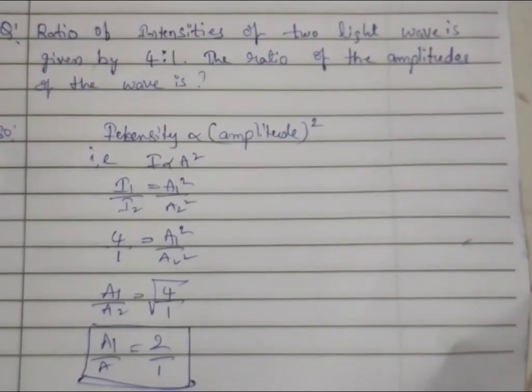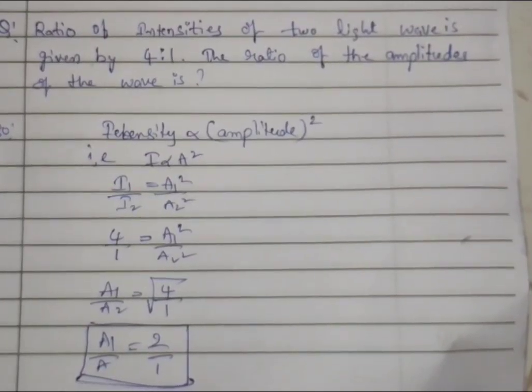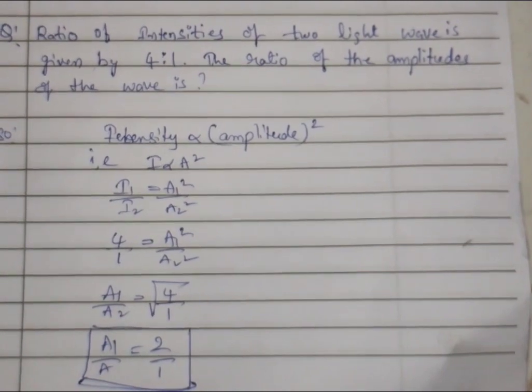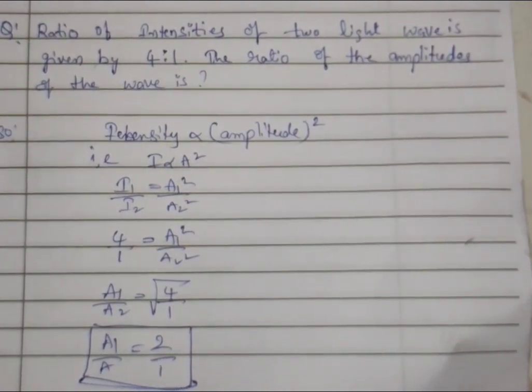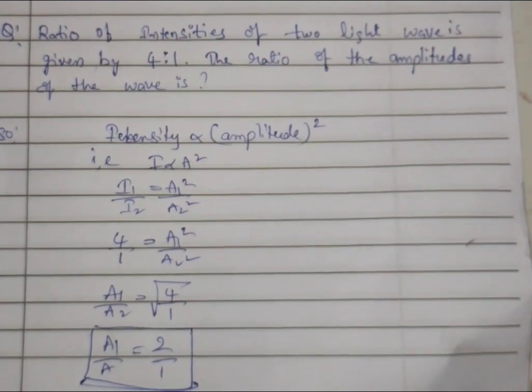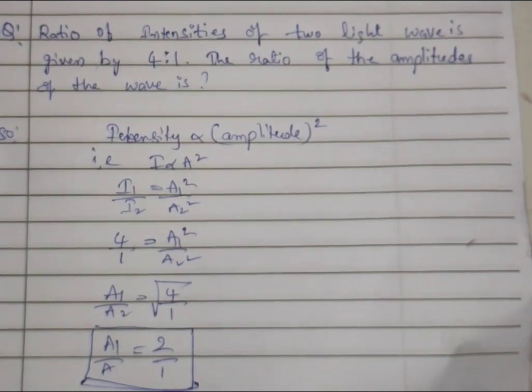Hello everyone, here is a wave optics problem related to intensity and amplitude. The question is: ratio of intensity of two light waves is given by 4 is to 1. The ratio of amplitude of the waves is what they're asking.